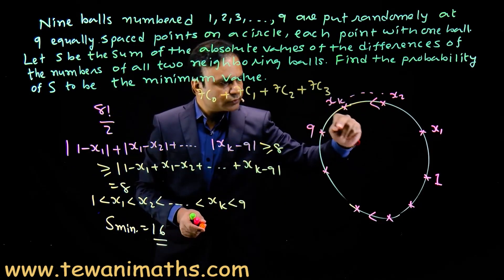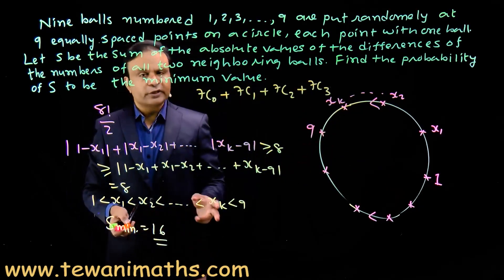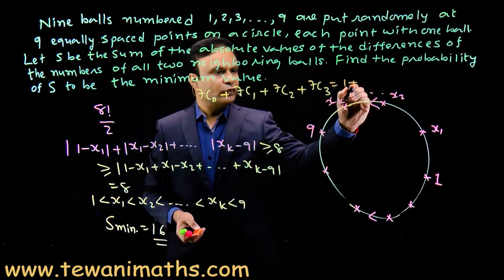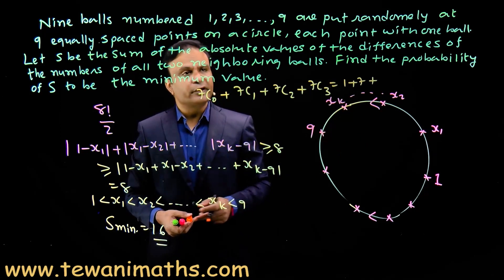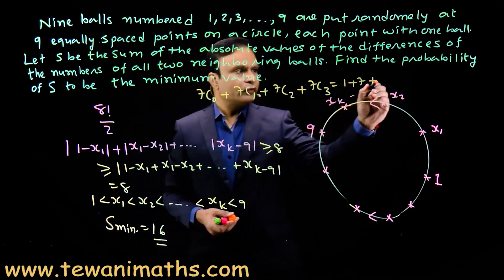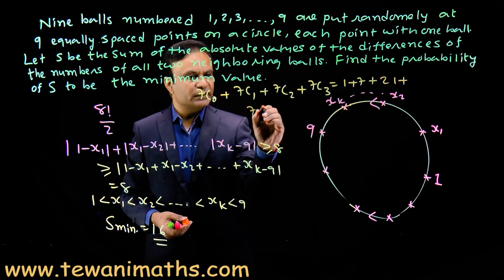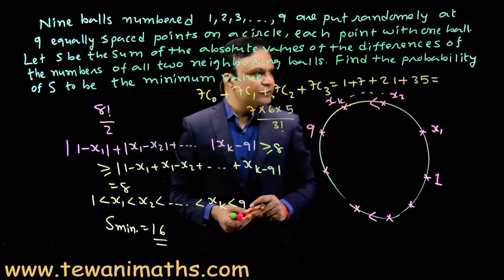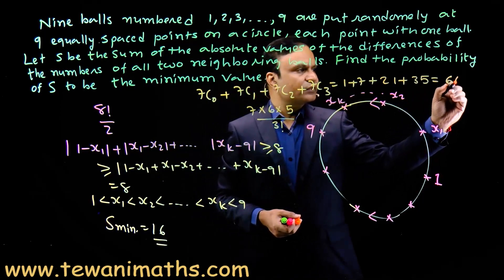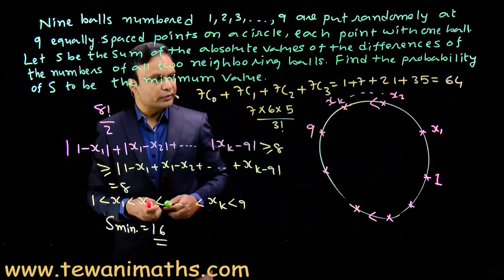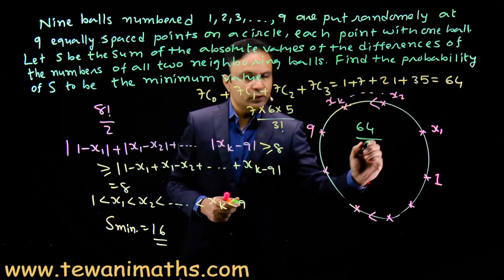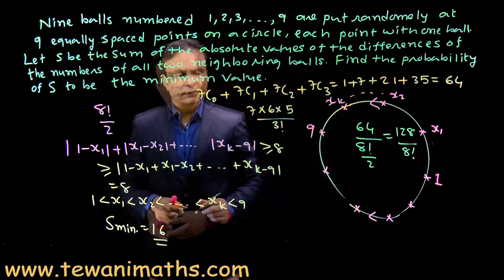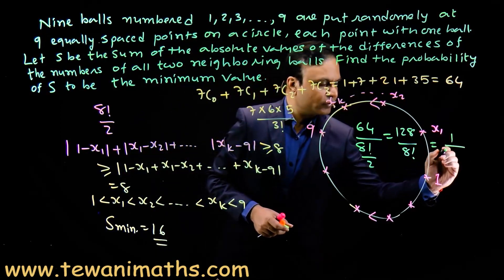So we have 64 favorable cases. The required probability is 64 divided by (8!/2), which equals 128/8!. Simplifying this gives 1/315.